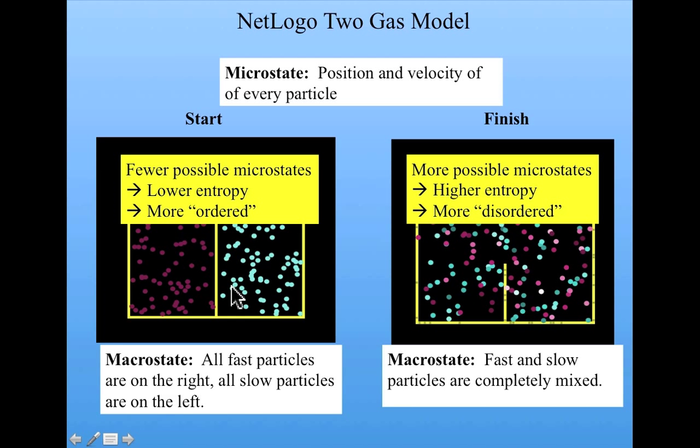So here on this side, of course, there's many different ways in which the blue particles could be individually arranged. And the red particles could be individually arranged in order for all fast particles to be on the right and all slow particles on the left. It's just that there's fewer such arrangements than there are arrangements in which they're all mixed.